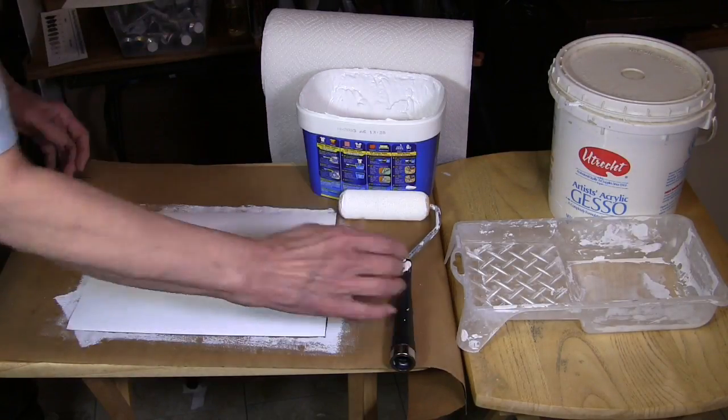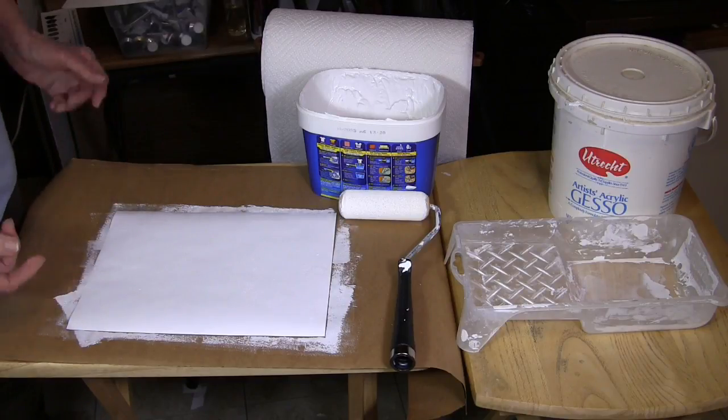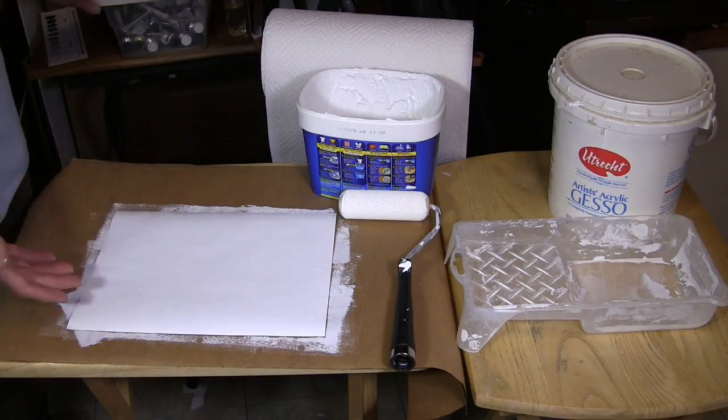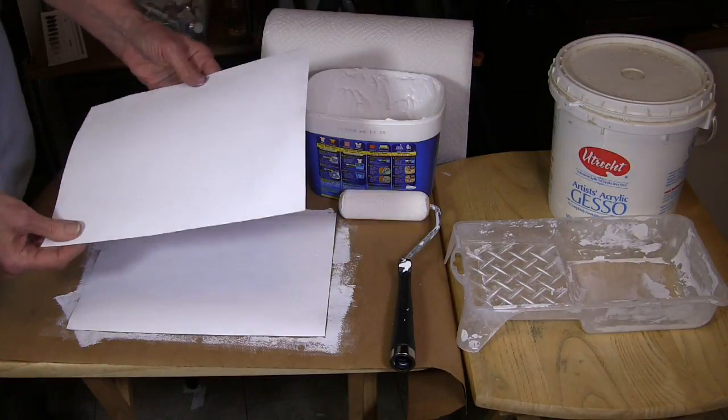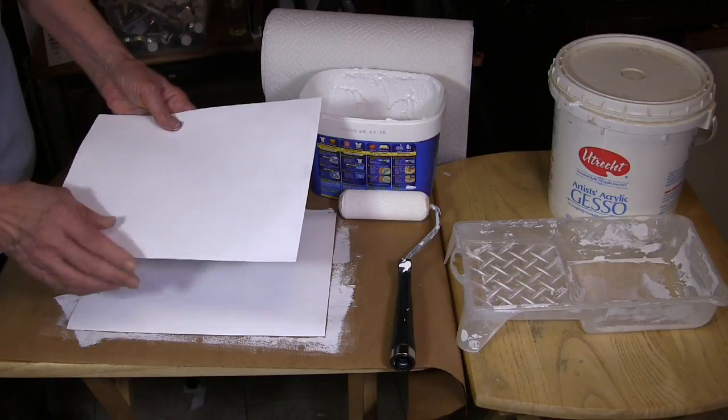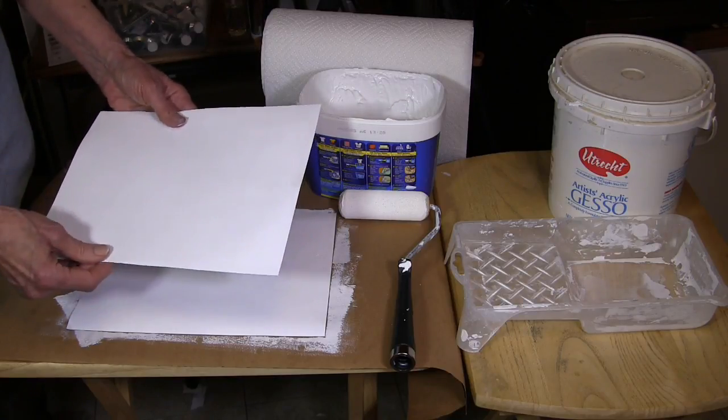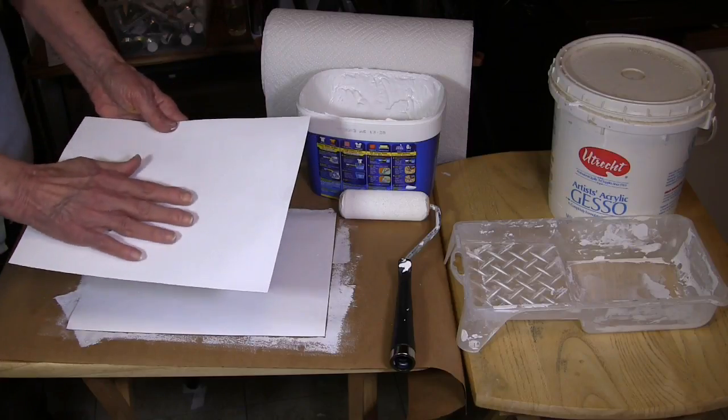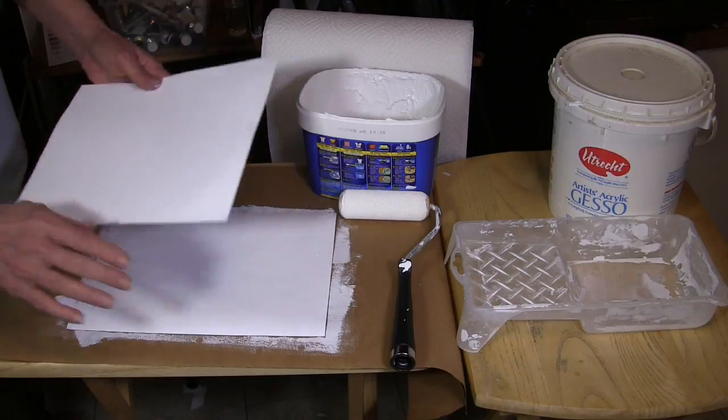What I do is I don't spend quite as much time refining it on the backside. Once the backside is dry, I put a little X there to let me know that's the backside, and then I turn it over and I give another coat to the other side. That's going to be my painting side, and I work that one quite carefully so that I get an even surface.